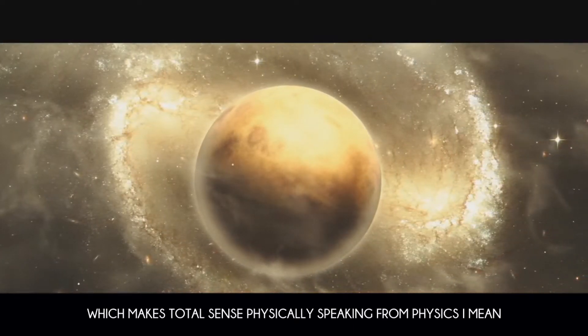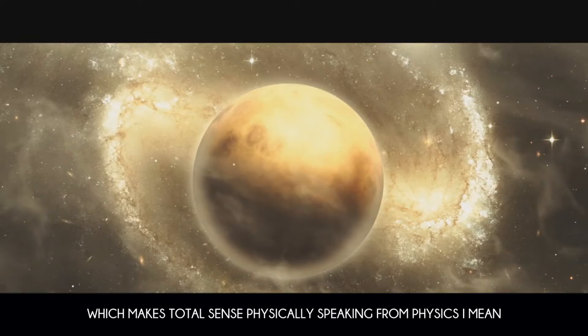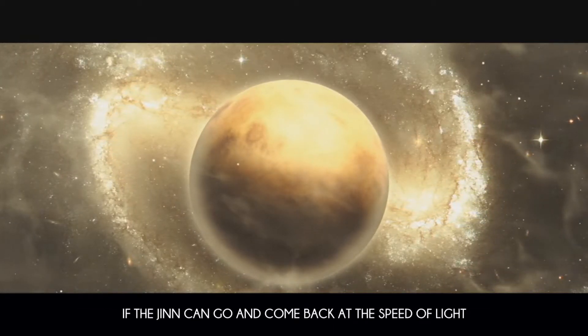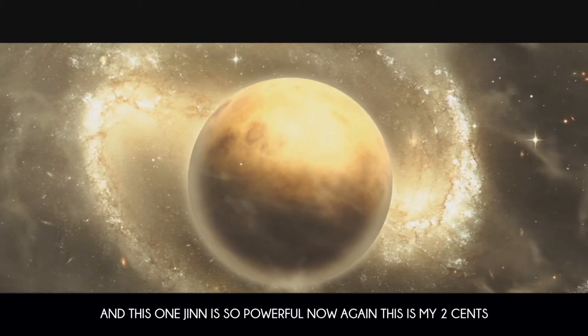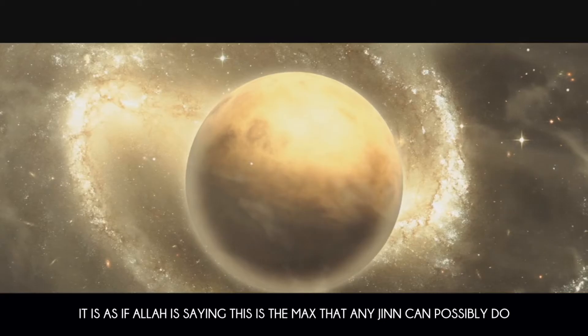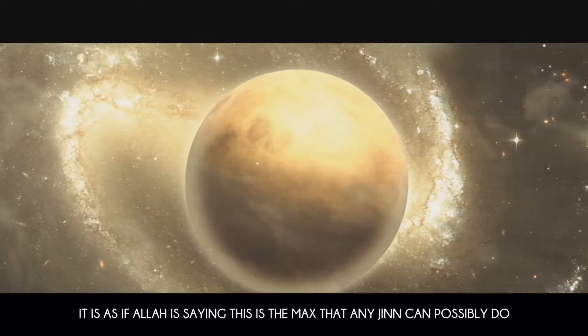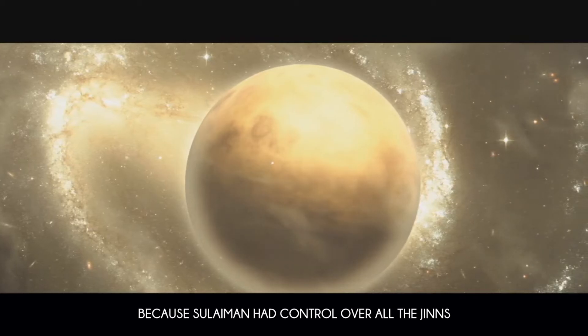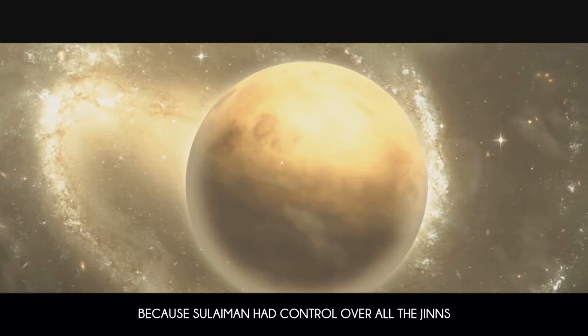Which makes total sense, physically speaking, from physics I mean. If the Jinn can go and come back at the speed of light, and this one Jinn is so powerful. Now again, this is my two cents. It is as if Allah is saying, this is the max that any Jinn can possibly do, because Suleiman had control over all the Jinns.